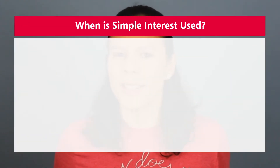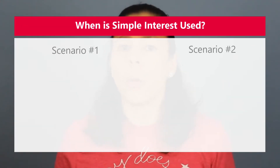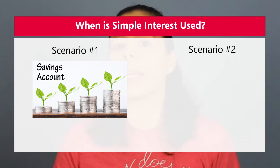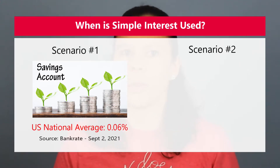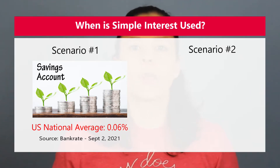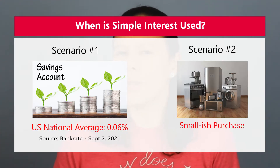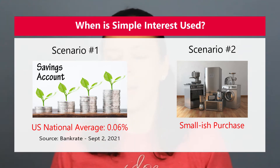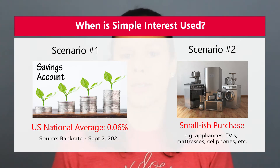So when do you use it? Well there are two different scenarios. One, when you put money in a savings account and they tell you that it will be accumulating interest, usually it is simple interest. And the second scenario is when you're making a smallish purchase that you have to pay off over a relatively short amount of time, like appliances, TVs, mattresses, cell phones, something like that. Now this is always at the discretion of the lender, so it is your responsibility to find out what kind of interest you're paying, or getting paid in the case of a savings account.